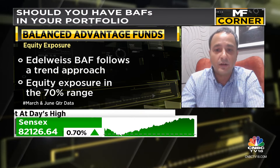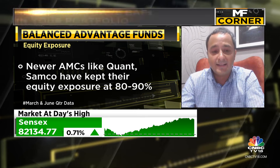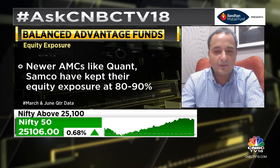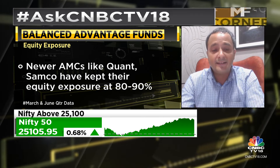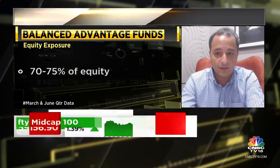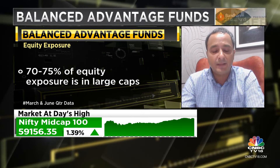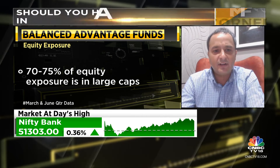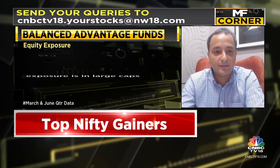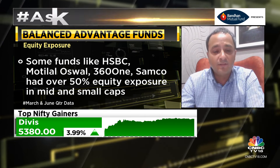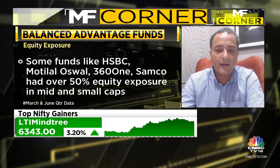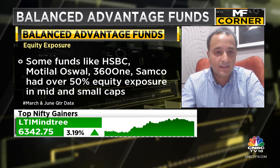Newer AMCs like Quant AMC or SAMCO AMC have kept equity exposure at 80% and even 90%. There's a big variance in equity exposure across various funds. The differentiation isn't limited to equity exposure level — it also extends to market cap allocation. On average, 70–75% of equity exposure is in large caps, but funds like HSBC, Motilal, or 361 have over 50% of their equity in mid caps and small caps. You must really understand all these dynamics before picking a balanced advantage fund.